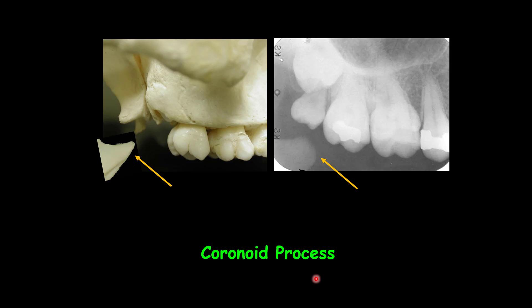The coronoid process of the mandible is frequently seen on periapical radiographs of the maxillary molars as a triangular radiopacity. Depending on the position of the jaw, the downward and forward movement of the mandible when the mouth is opened can cause superimposition of the coronoid process on the molars, or it can sometimes be superimposed on the teeth. This may affect our diagnosis, and it could be mistaken for a root fragment. In that case, we need to retake the radiograph, asking the patient to minimally open their mouth.